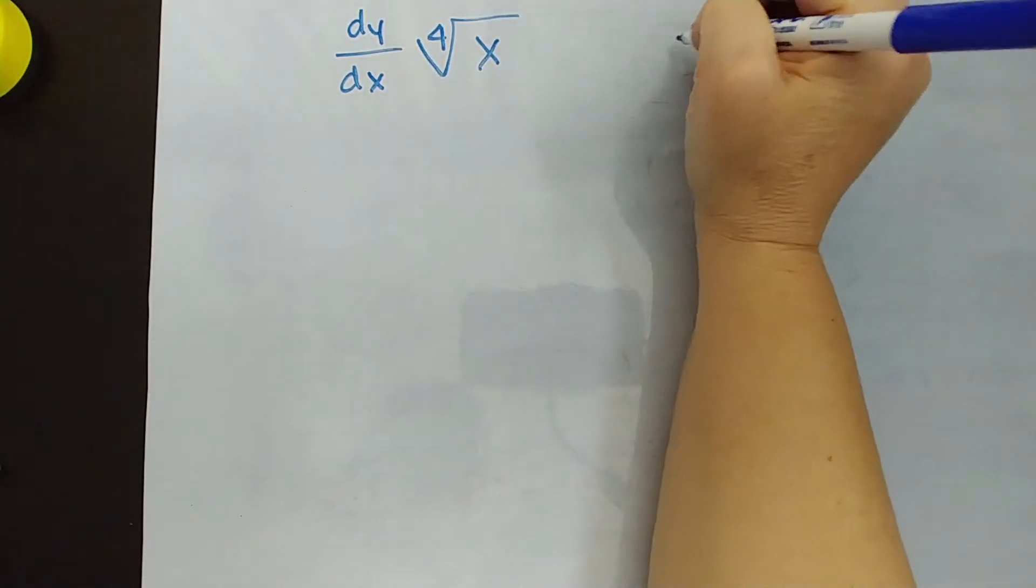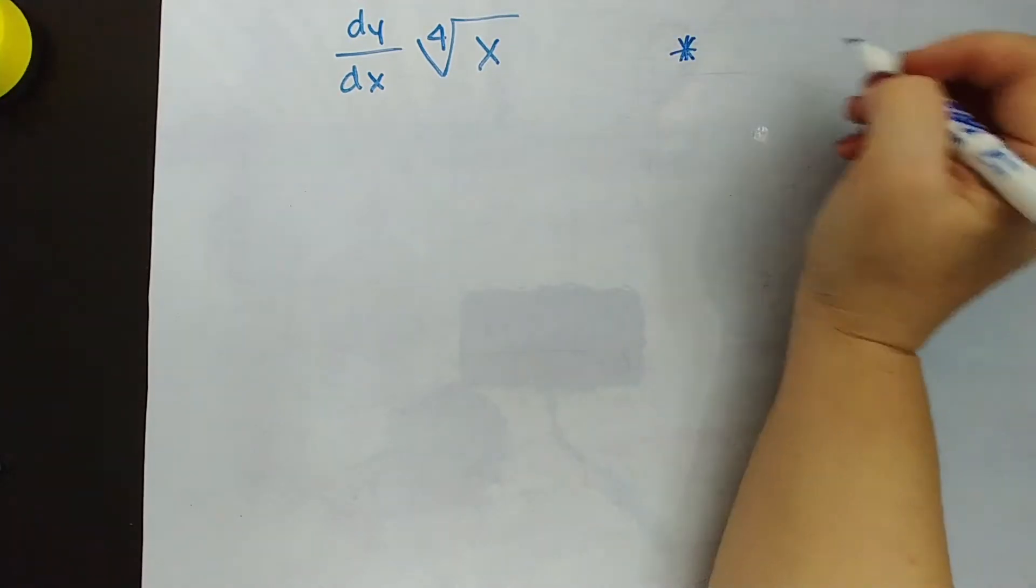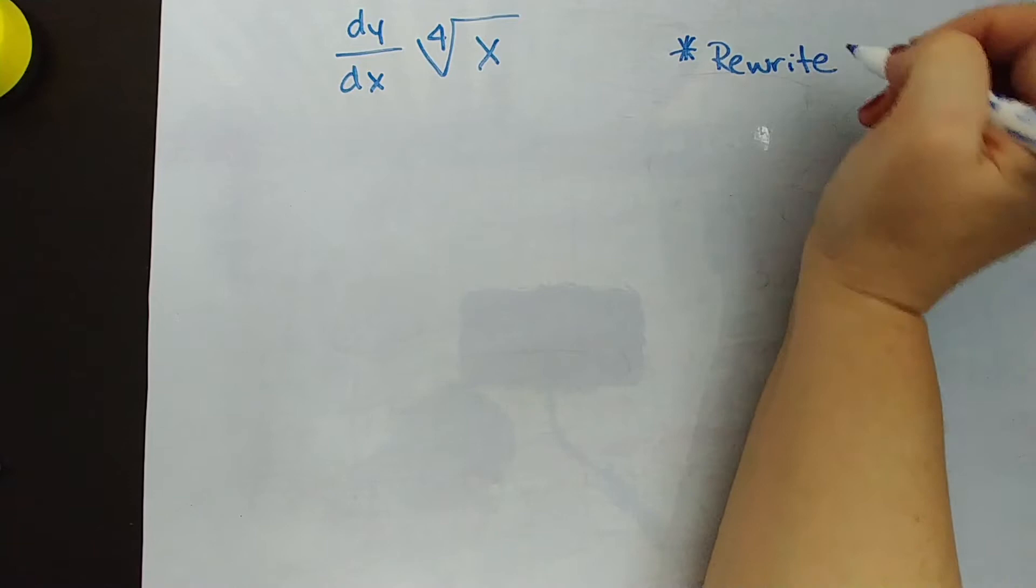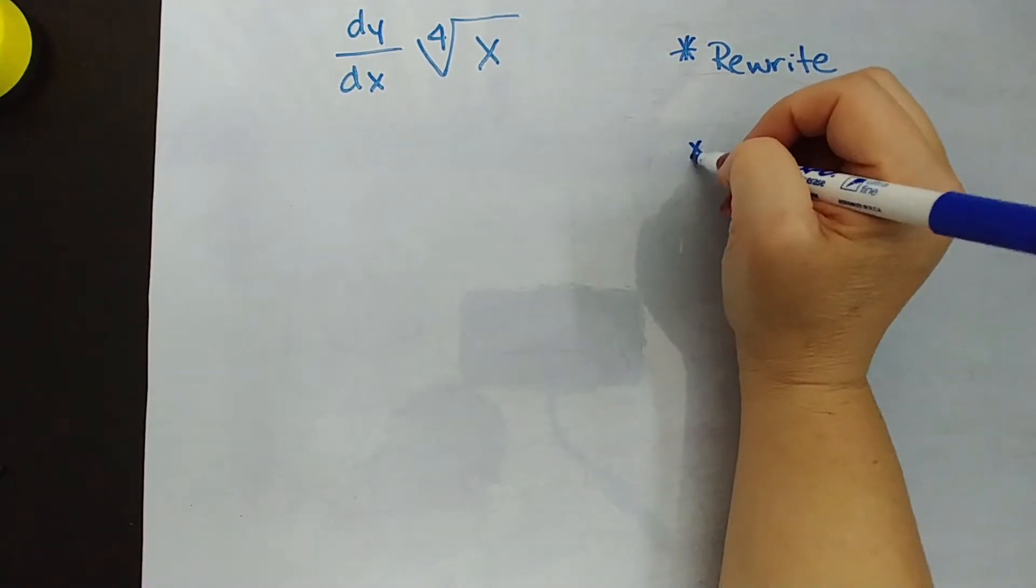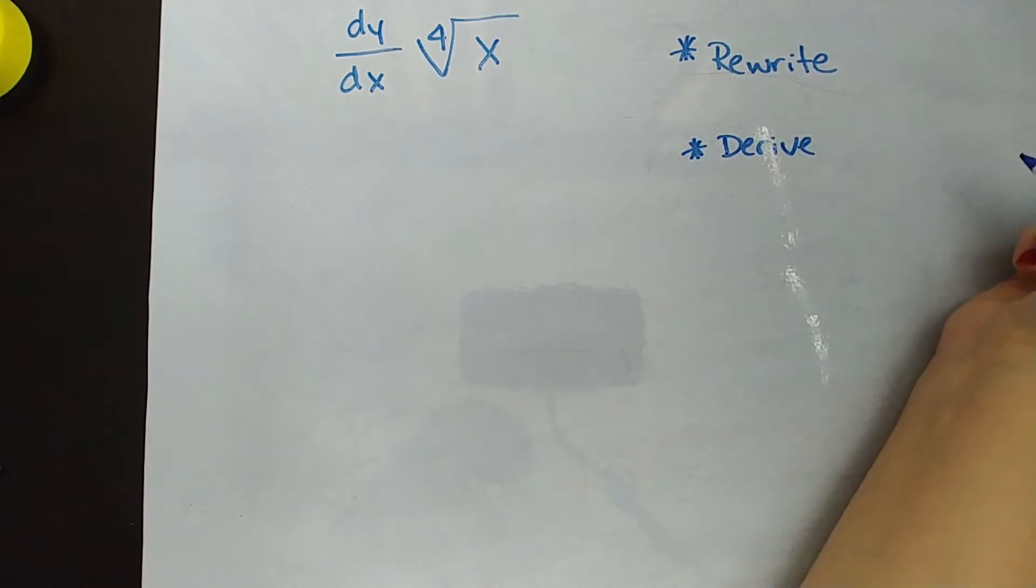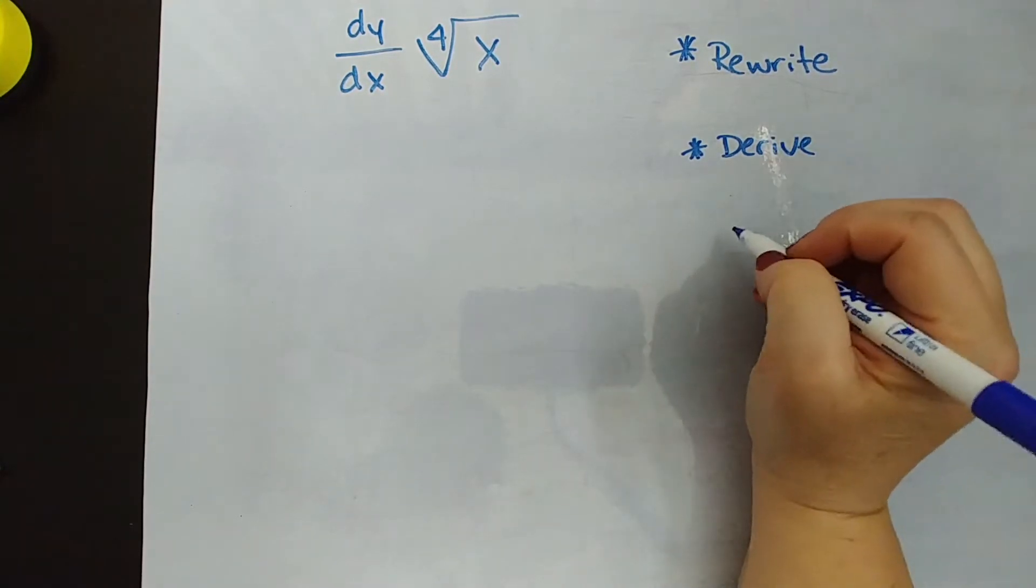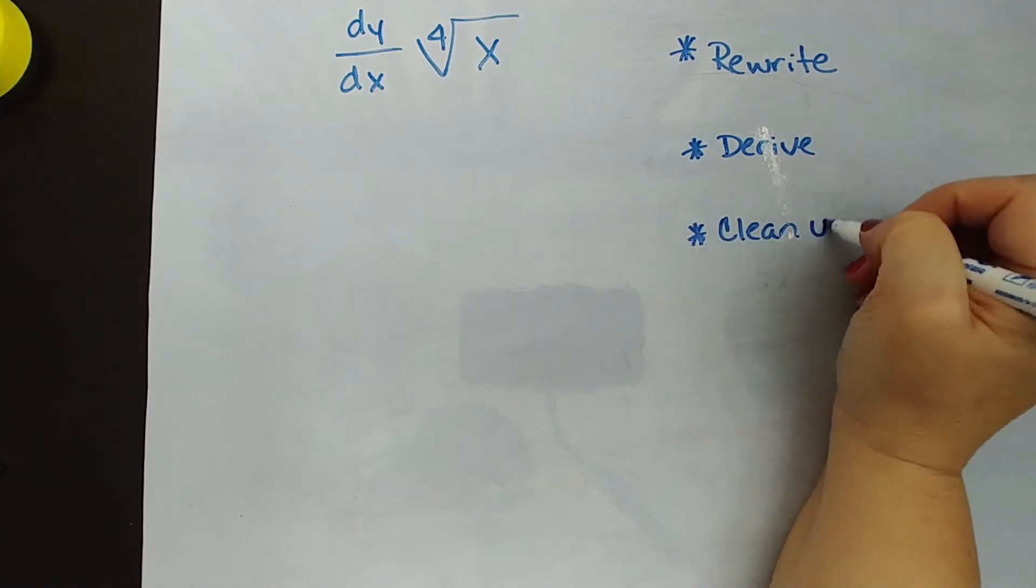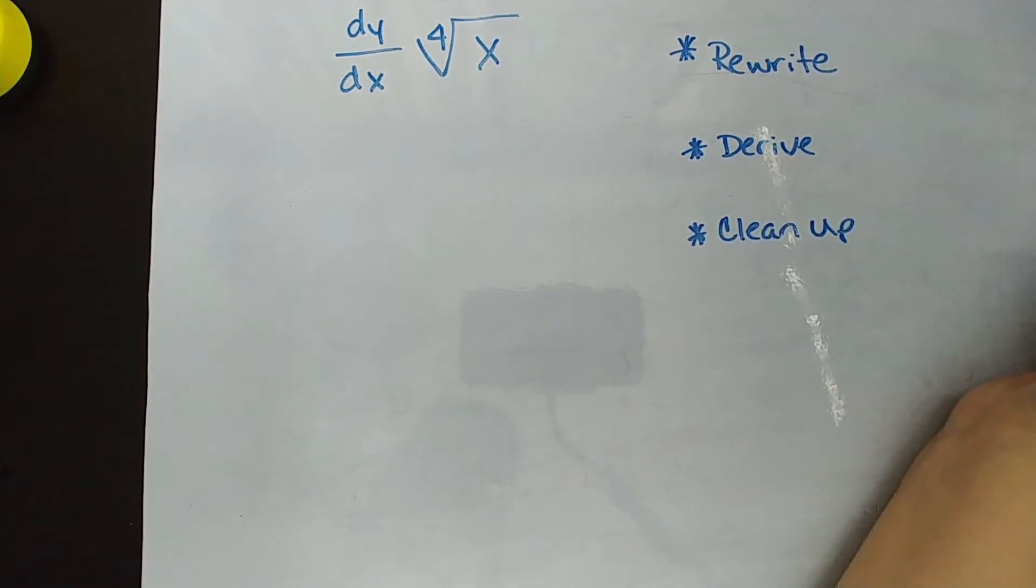So what we're going to do is what we do with a lot of functions. It's always best to see if you can rewrite something before you derive it. Do a little algebra before you jump into the calculus, then derive it. Only rewrite it if it's going to make it easier to derive, and you'll see how this will. Then you'll clean it up, and by clean up I mean we'll simplify and write it in proper form.